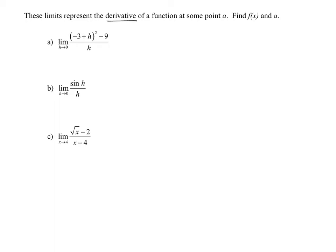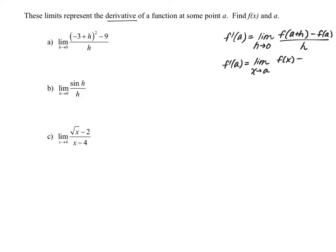It's helpful to go back to our limit definition of a derivative. We know that the derivative of a function at a, f prime of a, can be found by computing the limit as h approaches zero of f of a plus h minus f of a, all divided by h. We also know there's a second way: computing the limit as x approaches a of f of x minus f of a, divided by x minus a. These are the two ways we can compute a derivative with a limit.